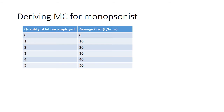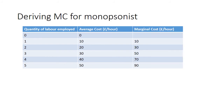How do we derive the marginal cost for the monopsonist? The marginal cost is the change in total cost divided by the change in the number of workers employed. For one worker at an average cost of £10, total cost is £10, so marginal cost is also £10. For two workers at an average cost of £20, total cost is £40 (20 times 2), so the marginal cost — the change in total cost — is £30.